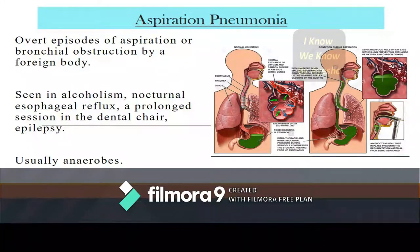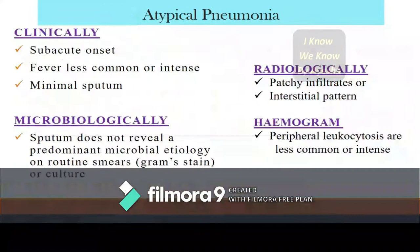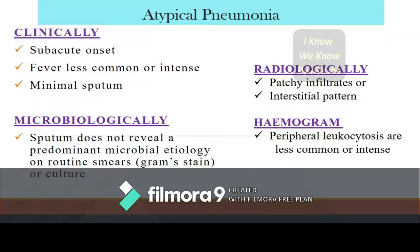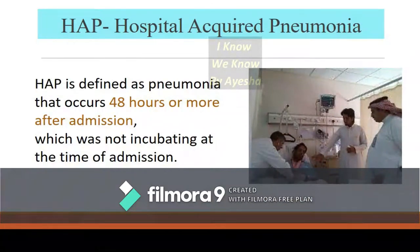Aspiration pneumonia involves overt episodes of aspiration or bronchial obstruction by a foreign body, seen in cases of alcoholism, nocturnal esophageal reflux, prolonged cessation in the dental chair, and epilepsy. Usually anaerobes cause this type. Atypical pneumonia is clinically diagnosed by subacute onset, less common or intense fever, minimal sputum, microbiologically unrevealing sputum cultures, radiologically patchy infiltrates or interstitial patterns on chest X-ray, and peripheral leukocytosis less common on hemogram.